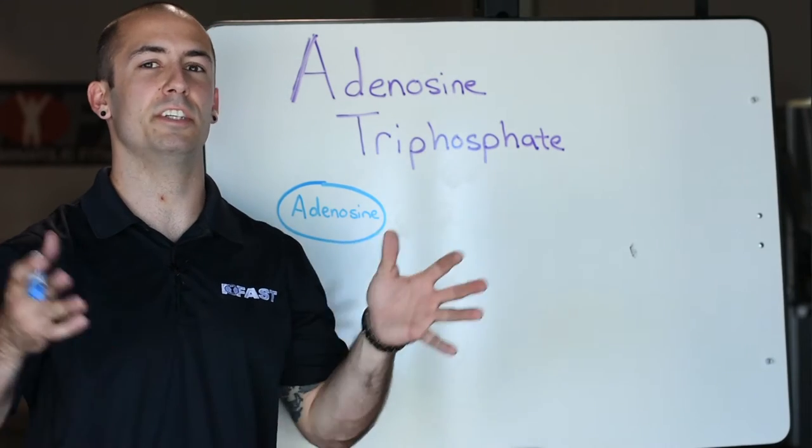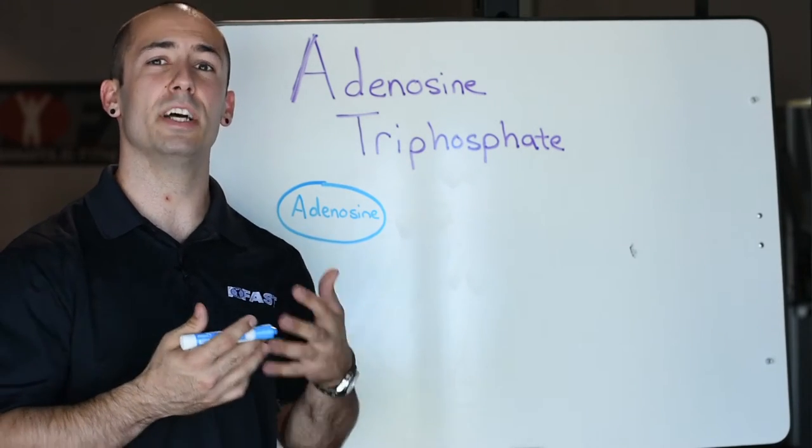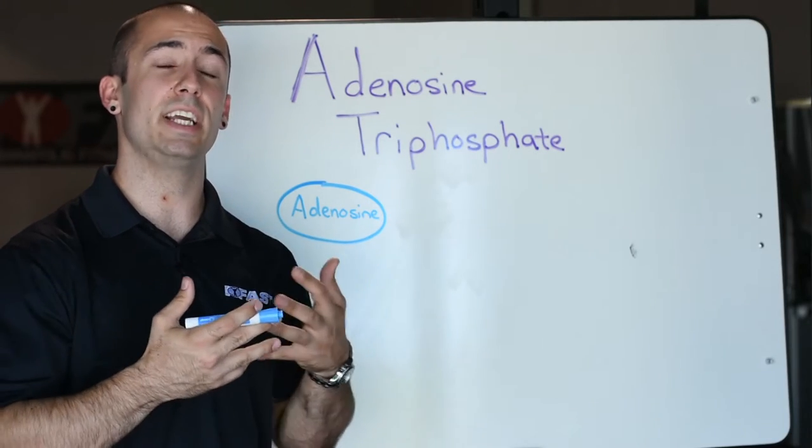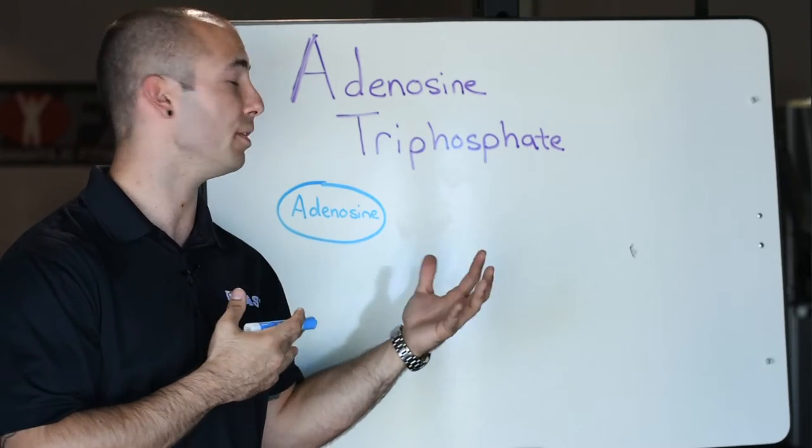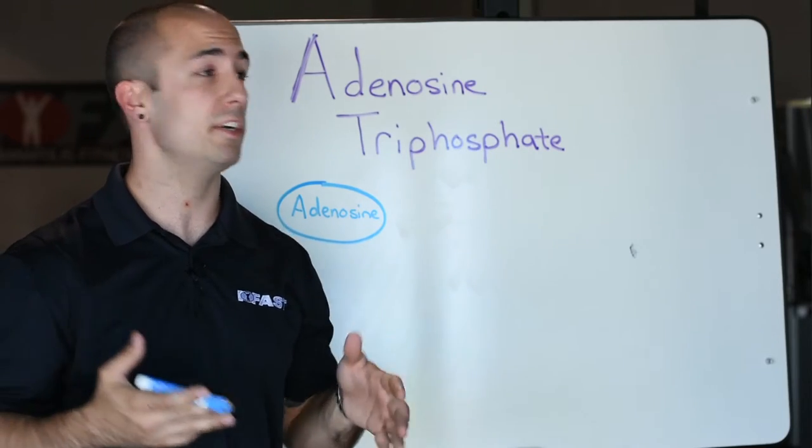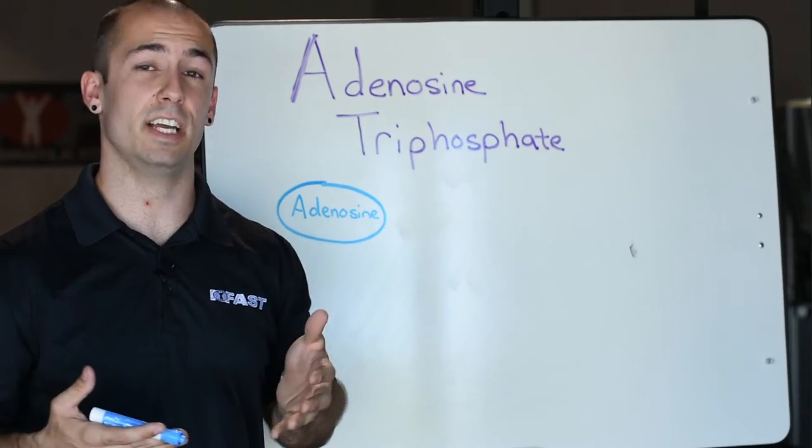So first of all, what is bioenergetics? All that means is how does biologically, how does an organism, especially a human in our case, make or break chemical bonds in its body to give you usable energy. We're talking about usable energy, we're talking about ATP or adenosine triphosphate.